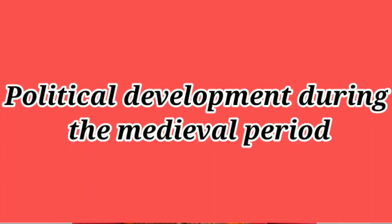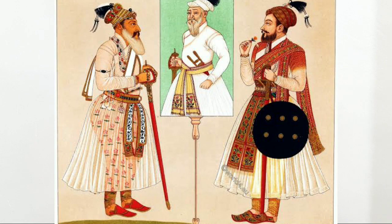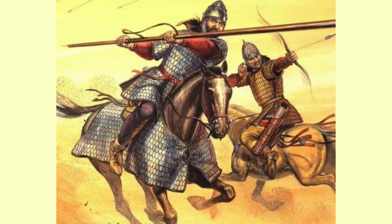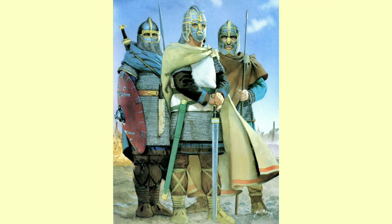Moving ahead with political developments during the medieval period. The first political development is that important groups of people emerged. Earlier we studied that Rajputs came up as an important warrior class. The meaning of Rajput is the son of a ruler, but it included rulers, soldiers and commanders of different monarchs in the subcontinent.